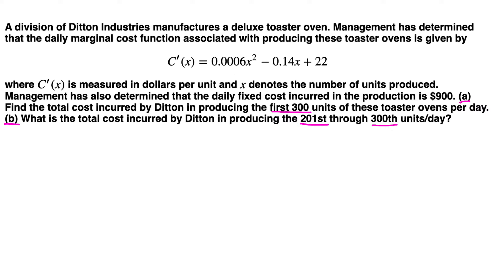This marginal cost function is given here, that's the derivative. So let's find the cost function. C is just the anti-derivative of this, so we can write the integral of 0.0006x² - 0.14x + 22 with respect to x.